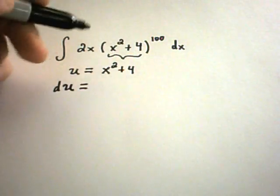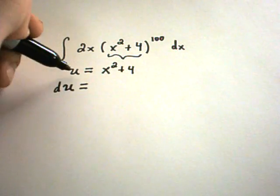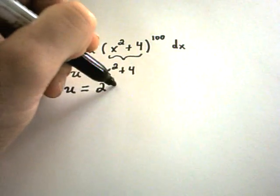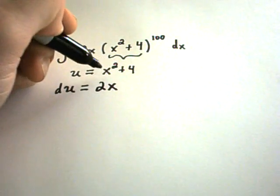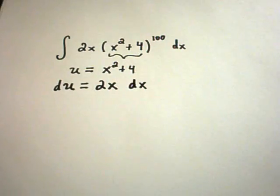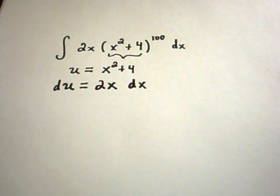So again, I'm calling u the stuff on the inside. I'm basically taking the derivative of u, which means I have to take the derivative of the right side as well. The derivative of x squared is 2x, 4 becomes 0, and then we tack on a dx. What you're actually doing here is calculating a differential.